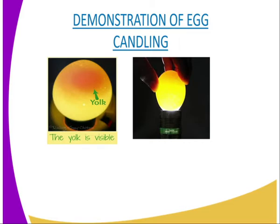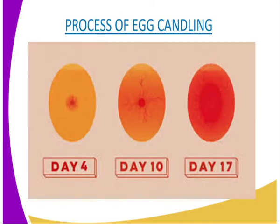If there is any abnormality in the egg, you can easily see and detect it. The process of egg candling: you are supposed to carry out egg candling for eggs meant for breeding. On the fourth day, you should make sure the egg does not have a cracked eggshell and is not double-yolked.